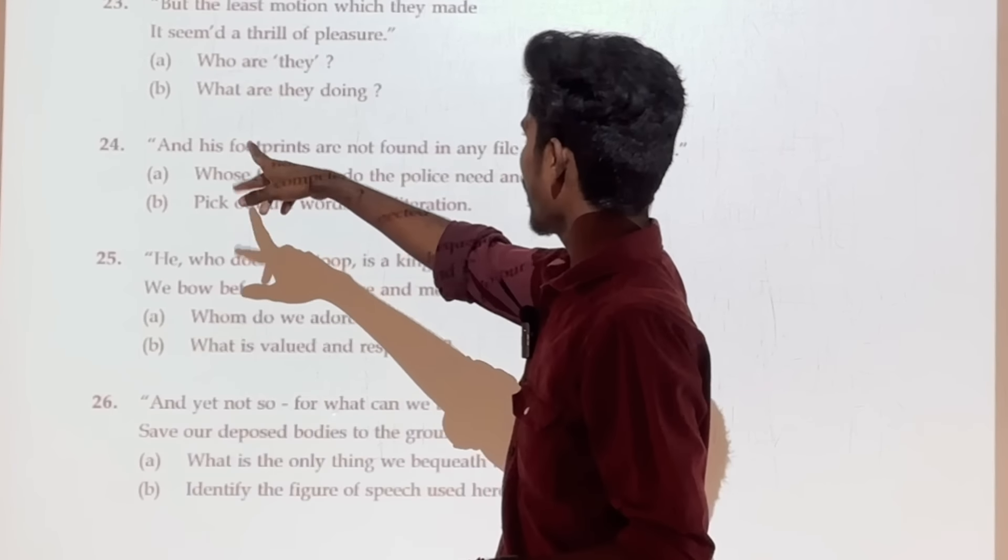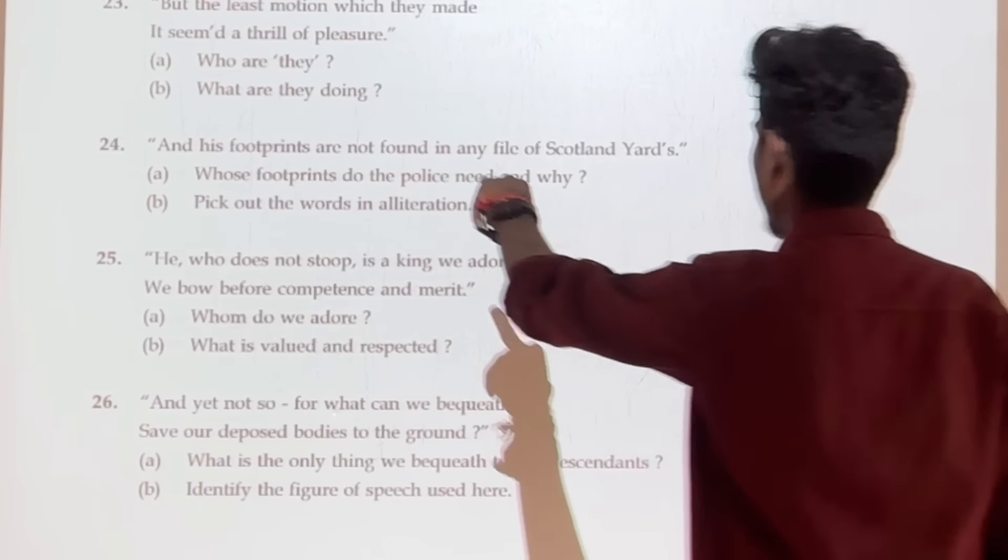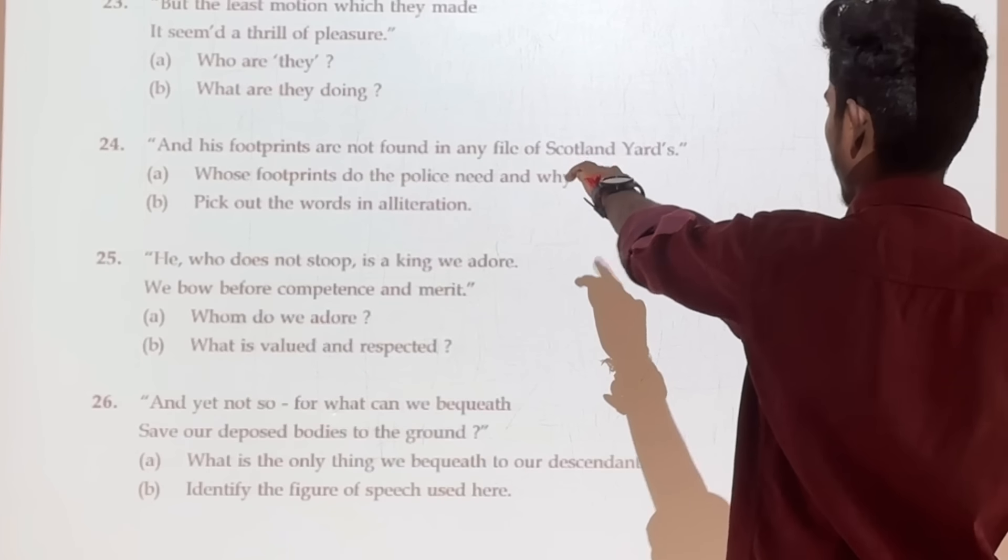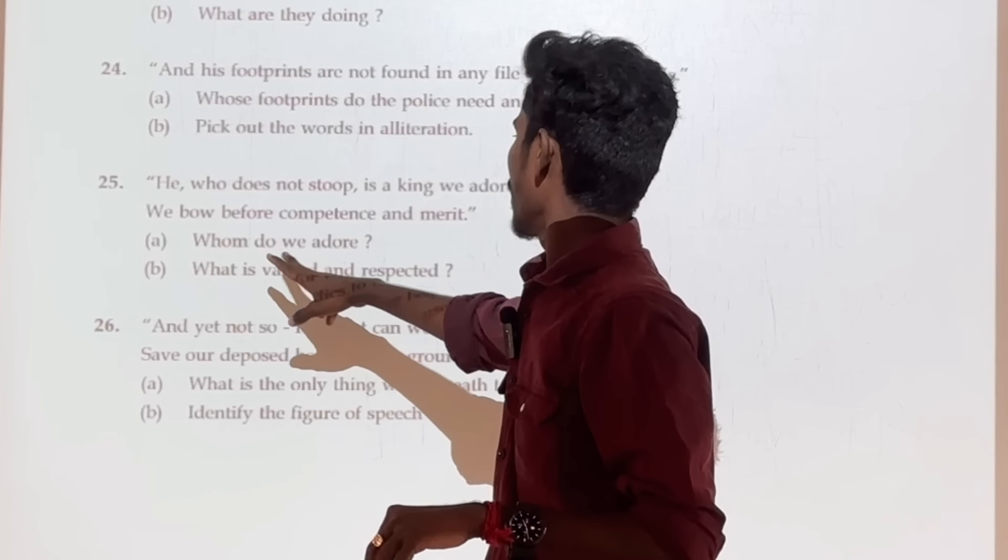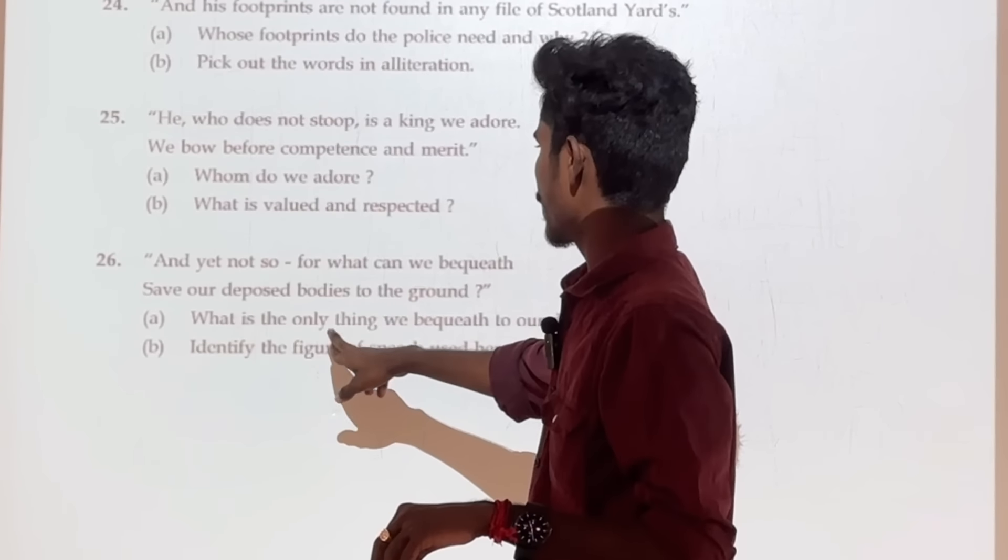Alliteration, you can read alliteration. Alliteration is the answer. Do we adore? Value respected. Figure of speech is the answer.